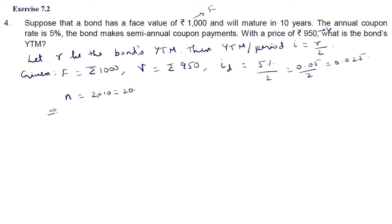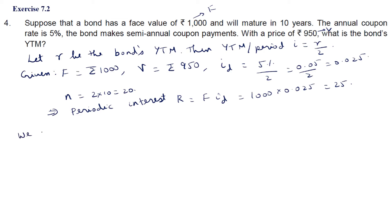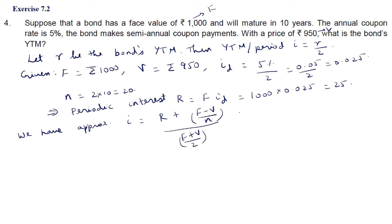From these values we can find the periodic interest payment: R = F × ID = 1000 × 0.025 = 25. Now the approximate yield to maturity per period is: I = (R + (F − V) / N) / ((F + V) / 2). We substitute each of these values to find the approximate value of I, and then multiply by 2 to get the bond's annual yield to maturity.